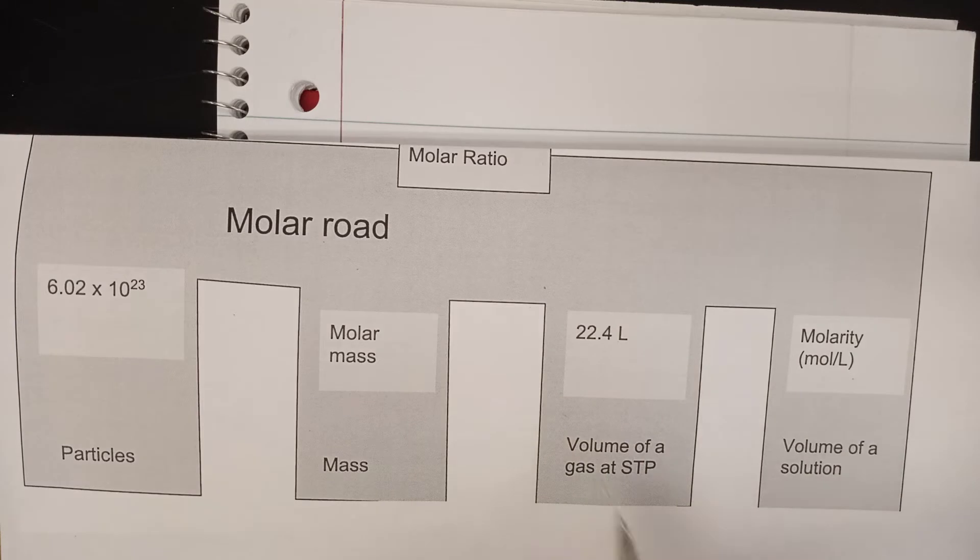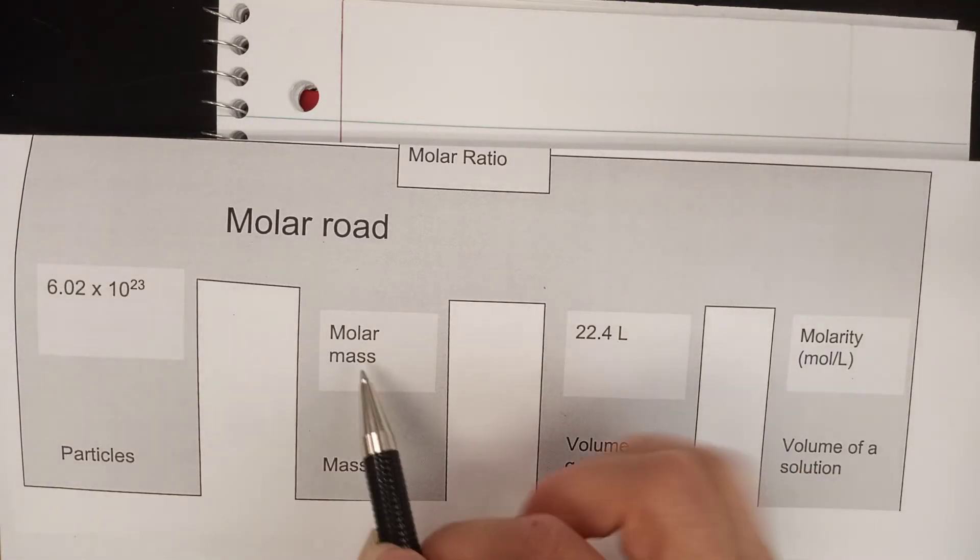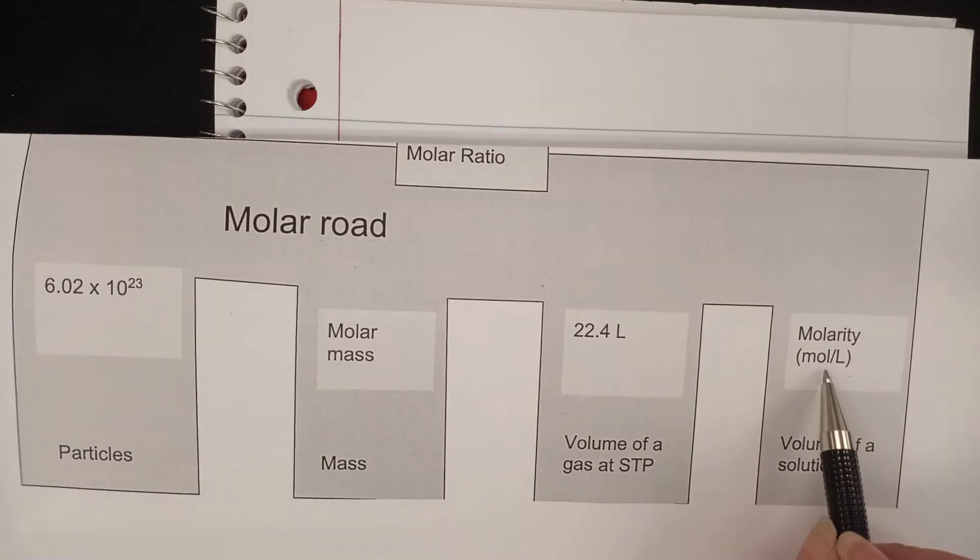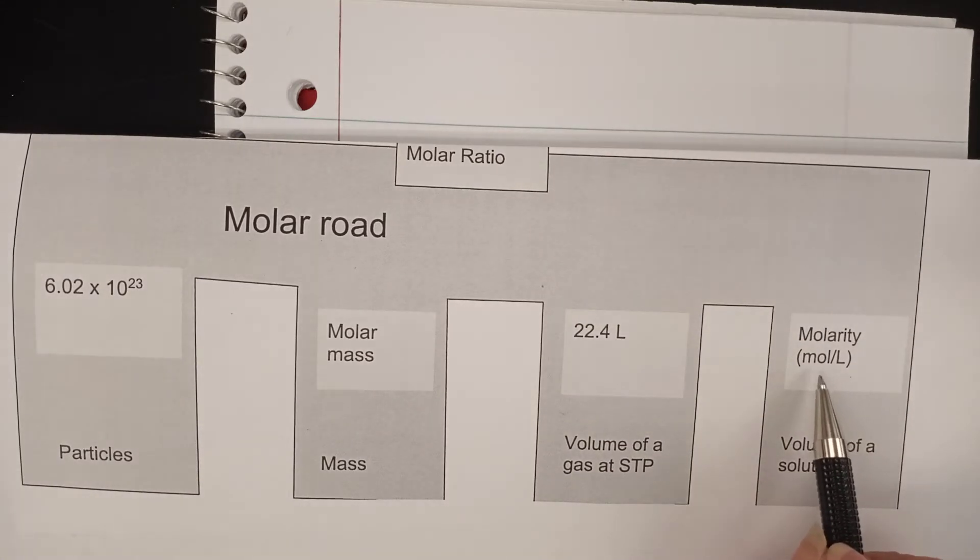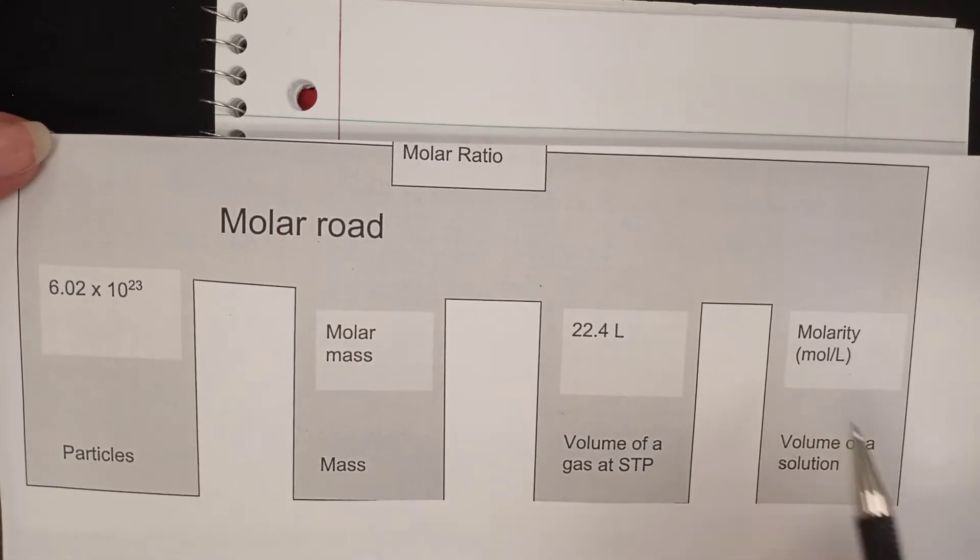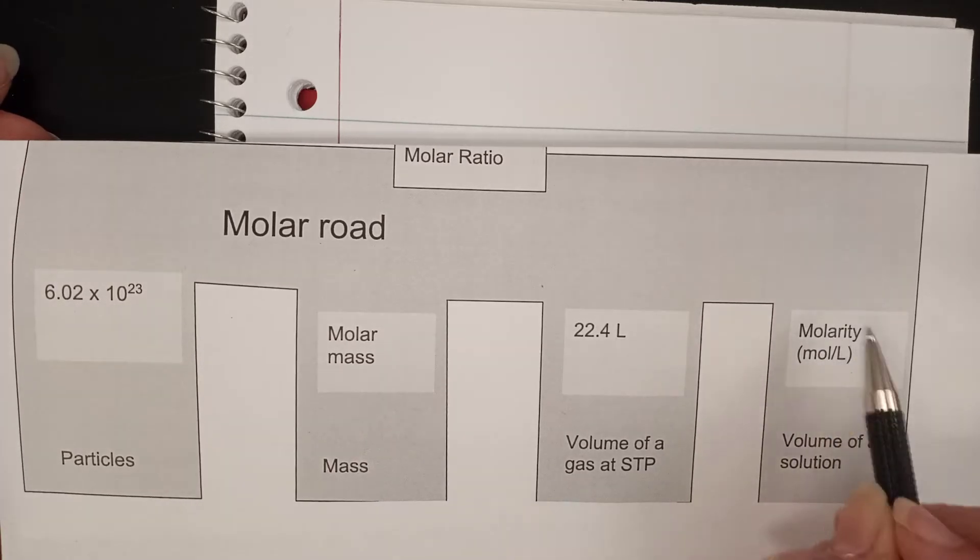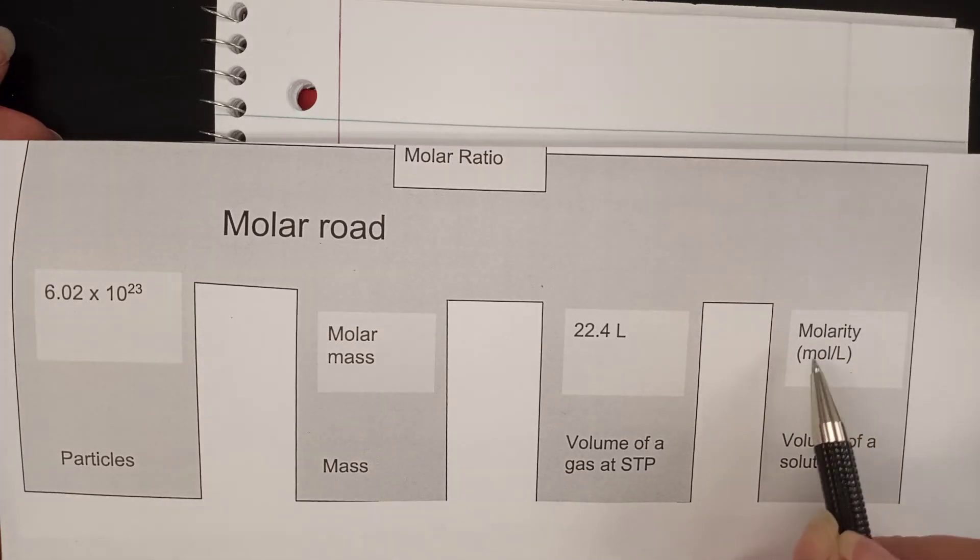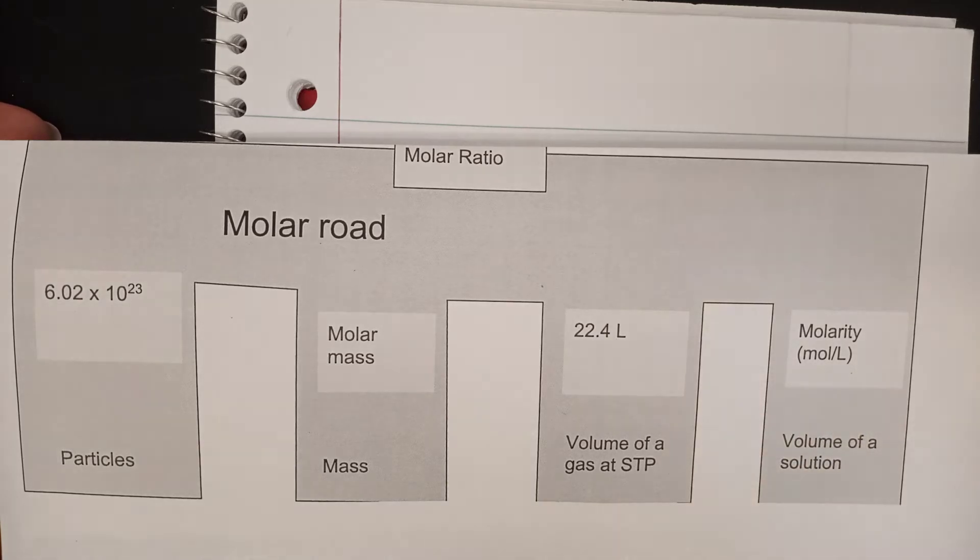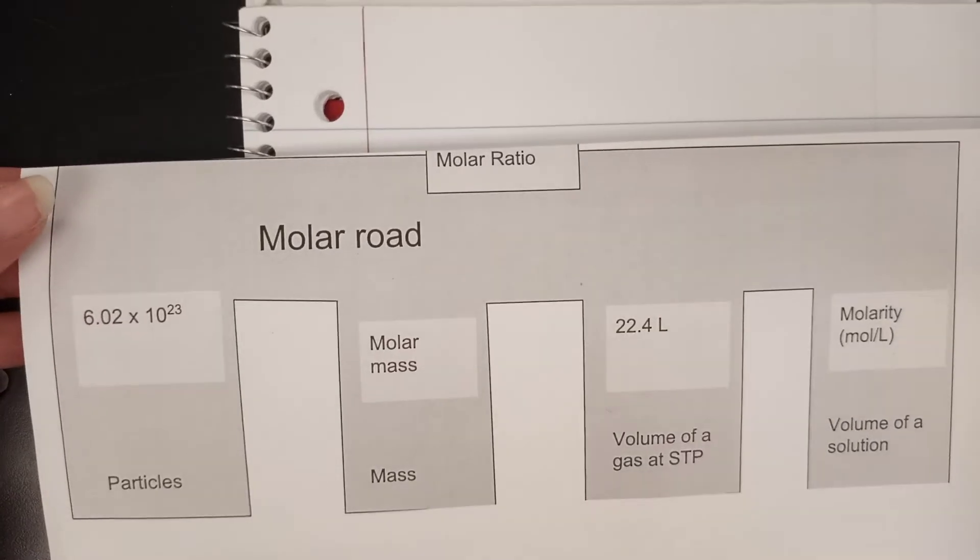Be really careful with this. Notice that both of these are volume, so don't automatically assume that 22.4 gets us to and from volume, because sometimes we're looking at a solution. This is only for a gas. We know how to find molar mass at this point. Molarity here is almost always in the question. We'll be told the molarity before we try to do this problem. I've got it written as moles over liters, but we've always put a capital M on it. They mean the same thing.